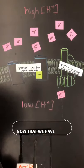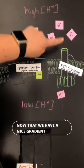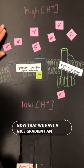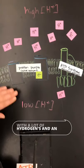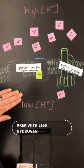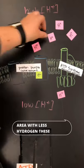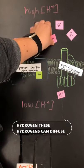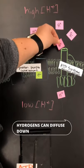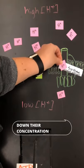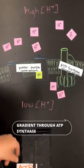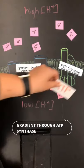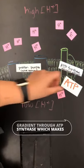Now that we have a nice gradient — an area with a lot of hydrogens and an area with less hydrogens — these hydrogens can diffuse down their concentration gradient through ATP synthase, which makes ATP.